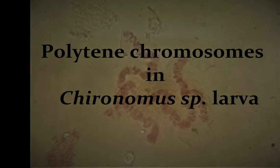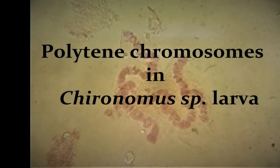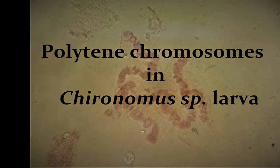Polytene chromosomes or giant chromosomes are unusually large chromosomes formed as a result of repeated rounds of DNA replication without cell division. The sister chromatids produced thus stay fused together. This type of repeated division of the chromosome in the absence of cytoplasmic division is called endomitosis.